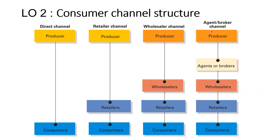There are four types of consumer channel structure. The first is the direct channel, where the producer can sell directly to the consumer. This type of channel is typically used for services, because you cannot separate the service provider from the consumer, or it can be direct from the producer's website where consumers order directly. The second is the retailer channel, where retailers are large enough — or have many branches — to buy directly in large quantities from the producer and sell to consumers.